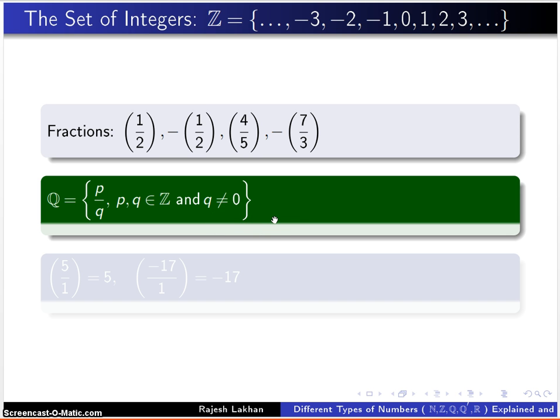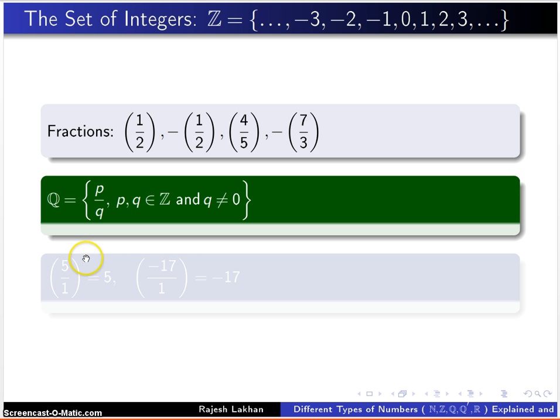Now again, let's make this analysis. When p is just say 5 and q is 1, this breaks down to 5. If p is negative 17 and q is 1, again this is negative 17. So we see that when q is 1, our rational numbers turn into integers. Again, we can't say that the set of integers is a subset of rational numbers, but more correctly, they behave like the rational numbers.